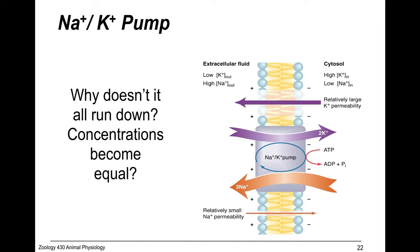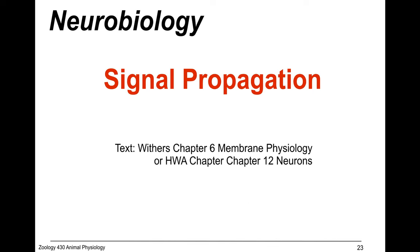The sodium-potassium pump in the membrane pumps three sodium ions out and two potassium ions in. It works against the gradient, so it requires energy — it takes ATP. There are also potassium leak channels, which are large and permeable to potassium ions that flow through freely. This is how neurons recharge and restore resting conditions, and the next video will cover signal propagation.